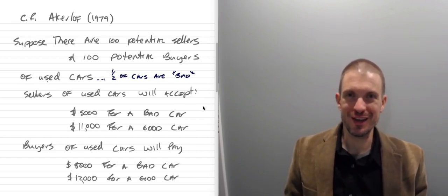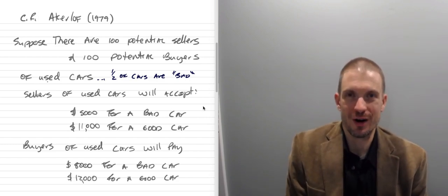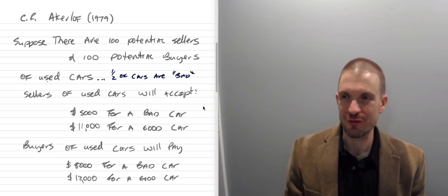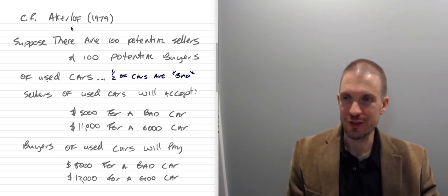Okay, so hello and welcome everyone. In this video, I'm going to talk about the market for lemons. I'm going to talk about asymmetric information, which comes from George Akerlof's 1979 paper.